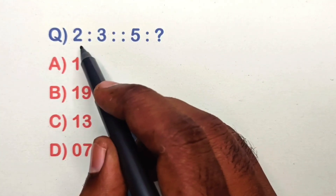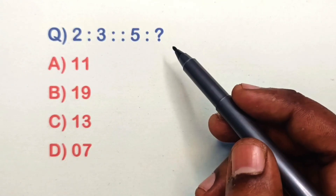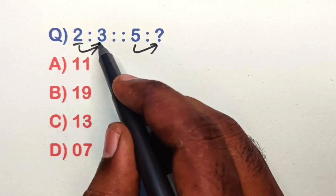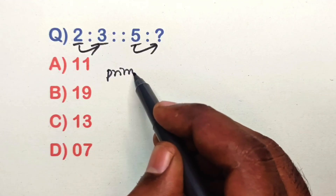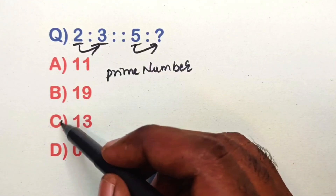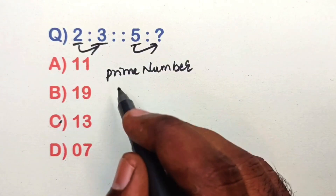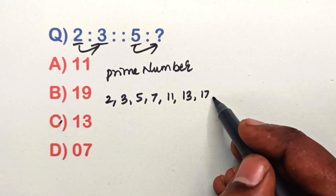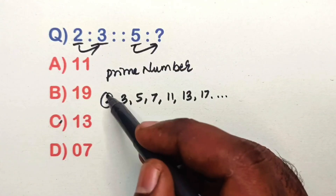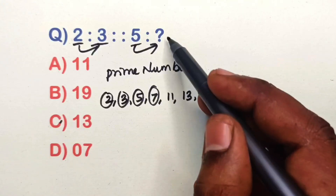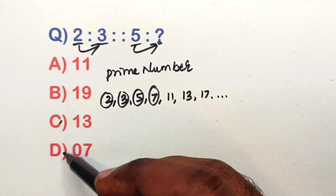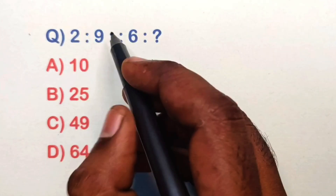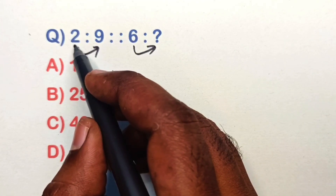This is an analogy question video where we learn all types of problems. Find the relation: 2, 3, 5 are prime numbers, so the given options are also prime numbers. The prime number sequence is 2, 3, 5, 7, 11, 13, 17, and so on. Marking 2, 3, 5 — the next number is 7, so option D is correct.